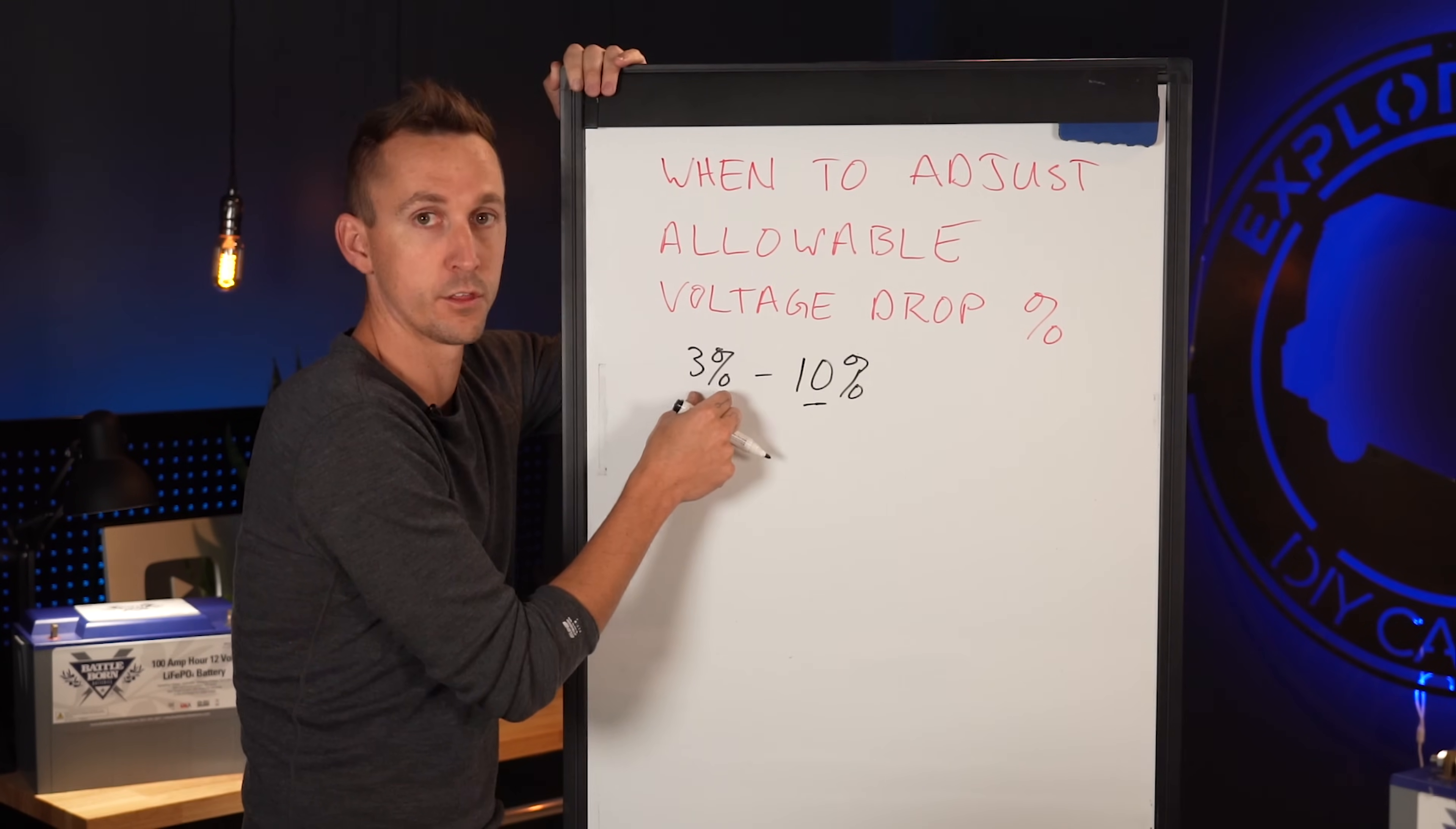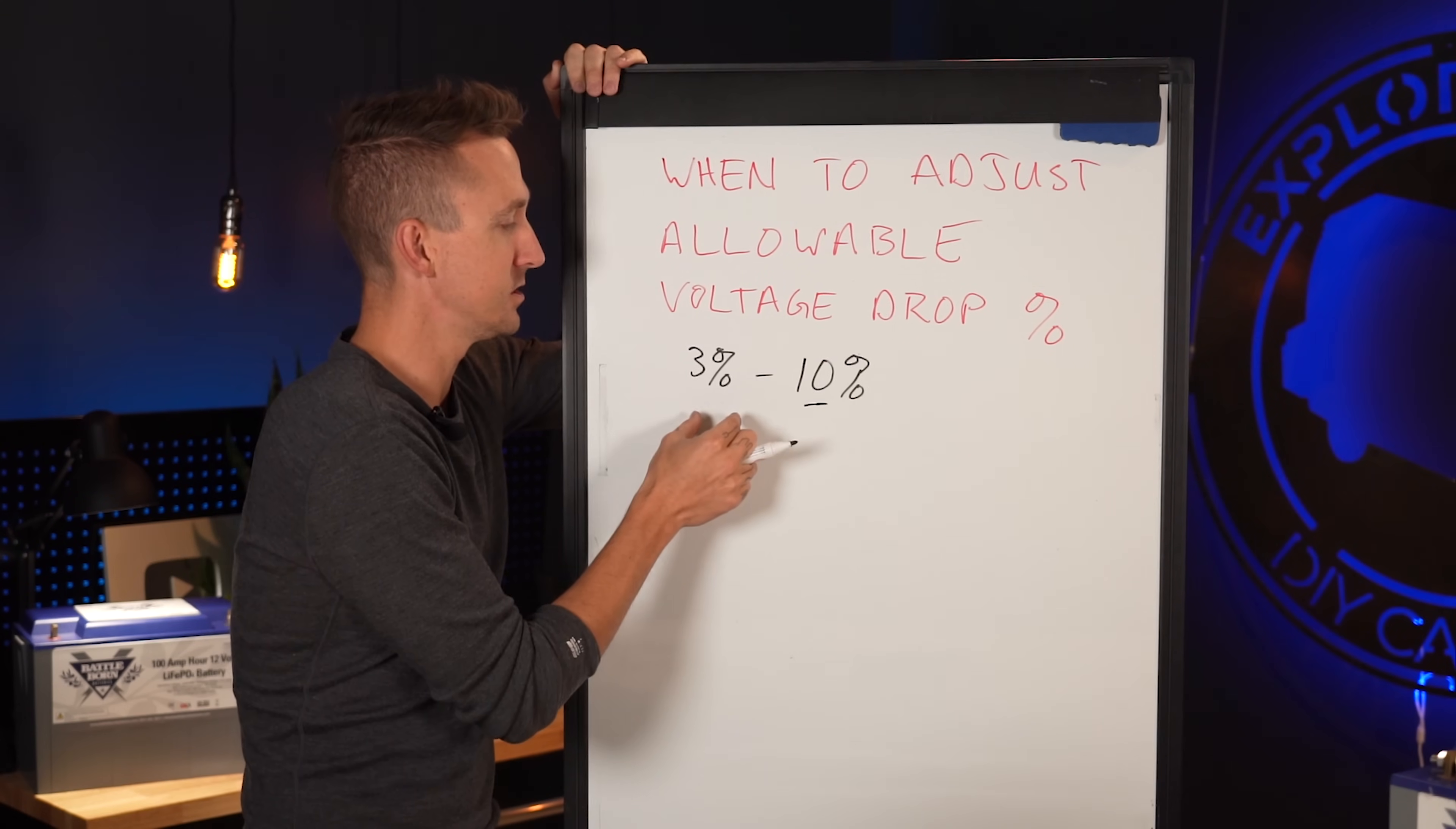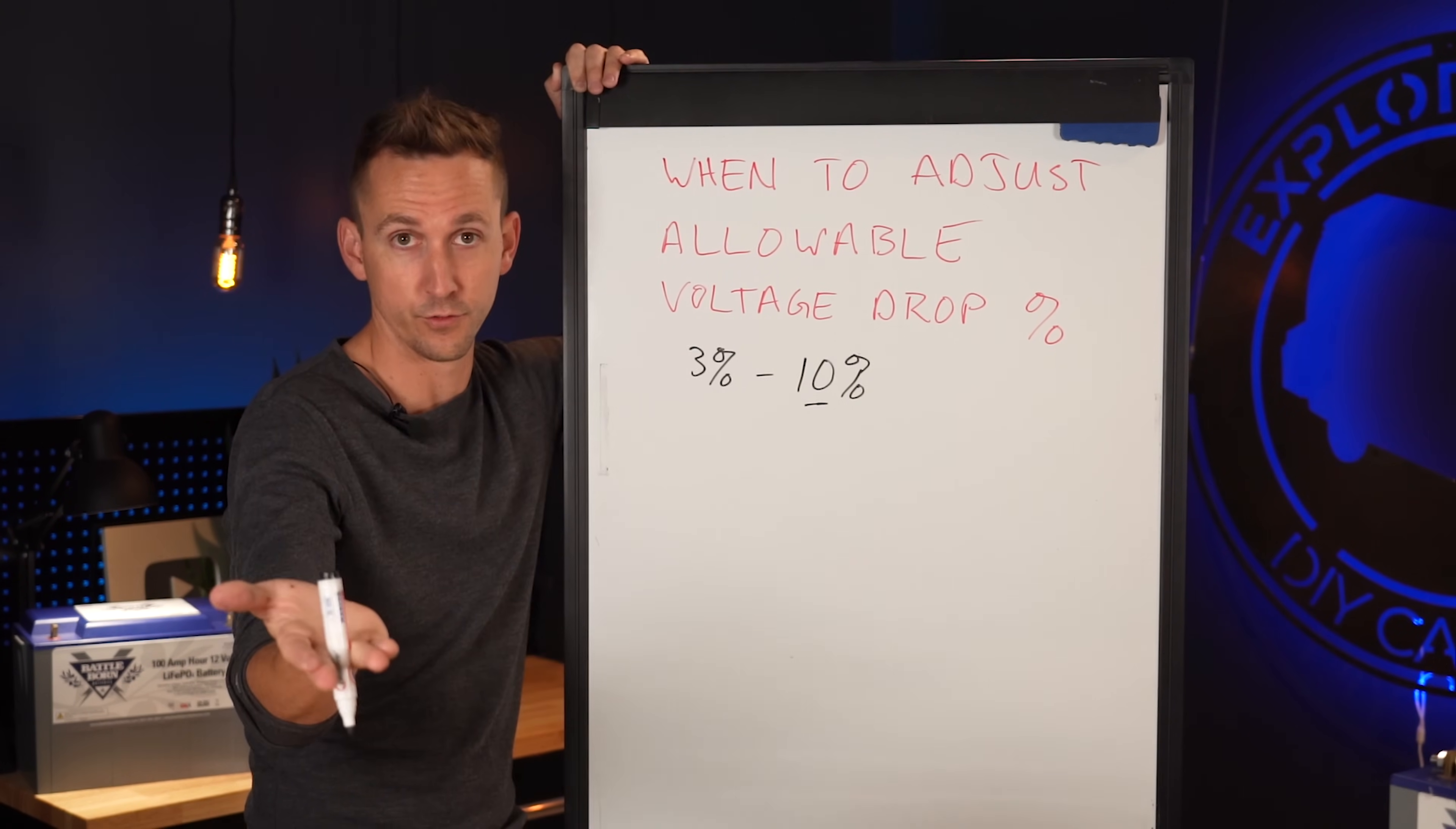Now you want to be closer to three or even lower for like inverter circuits, where if you pull too much power from a system, it's going to introduce DC ripple. Now that's a totally different conversation than voltage drop, but higher powered items, we should keep those at a lower voltage drop to avoid that.